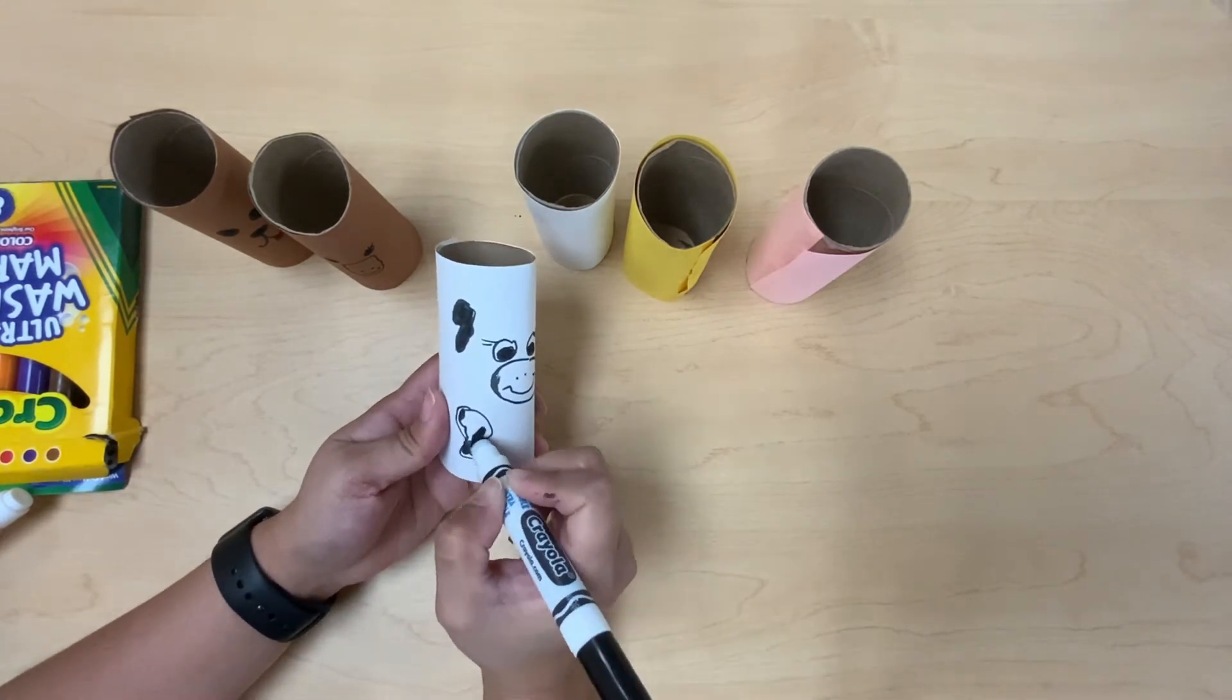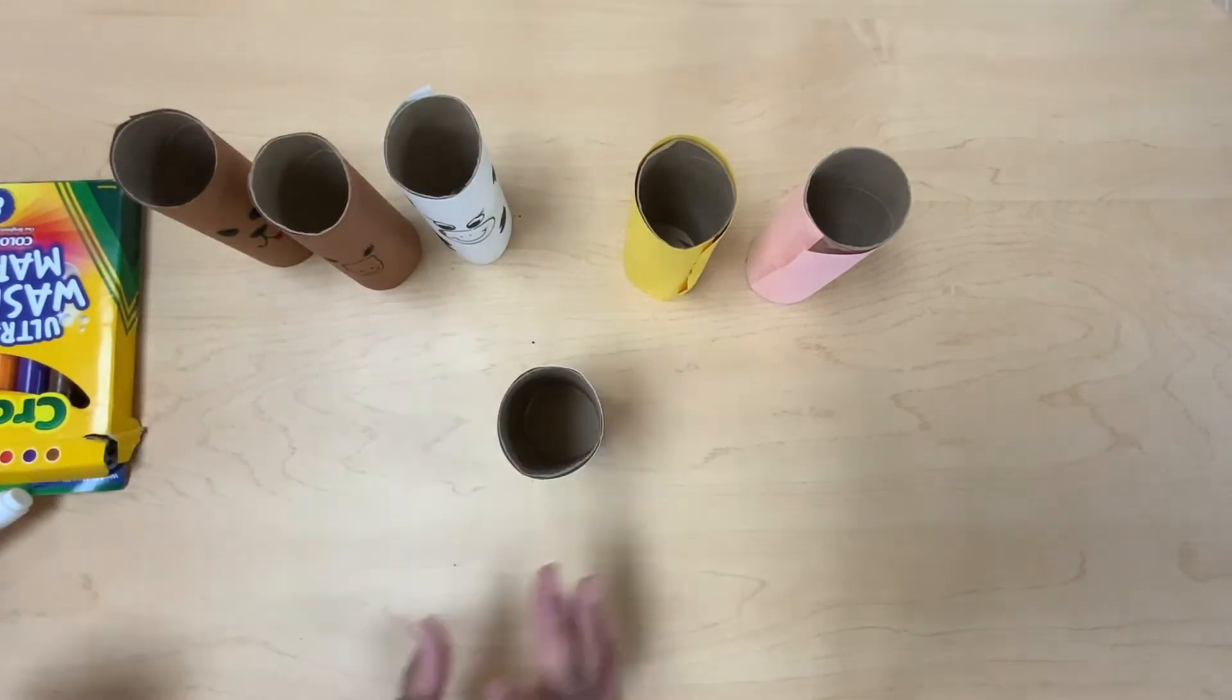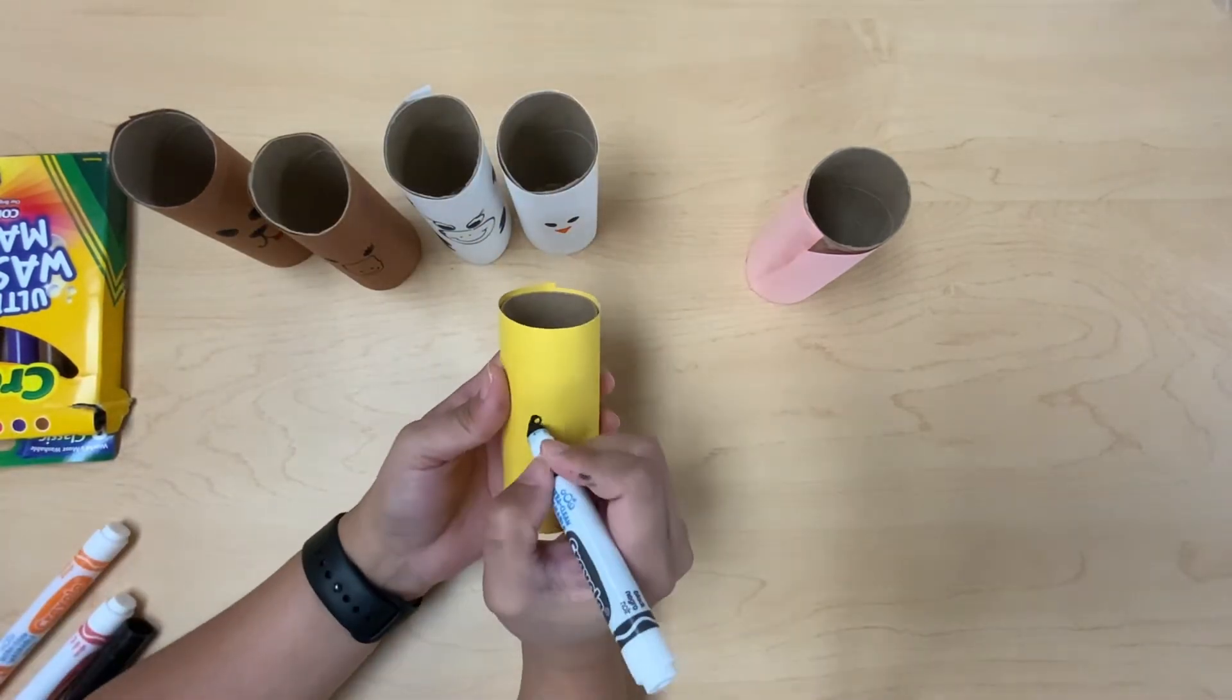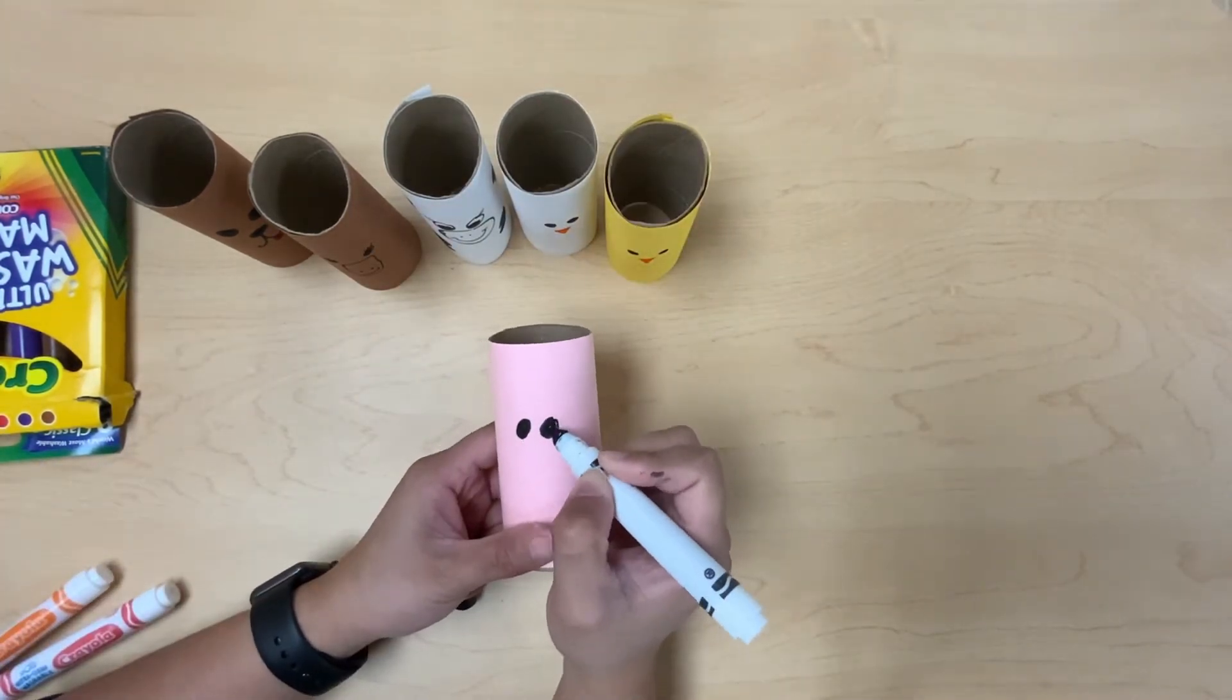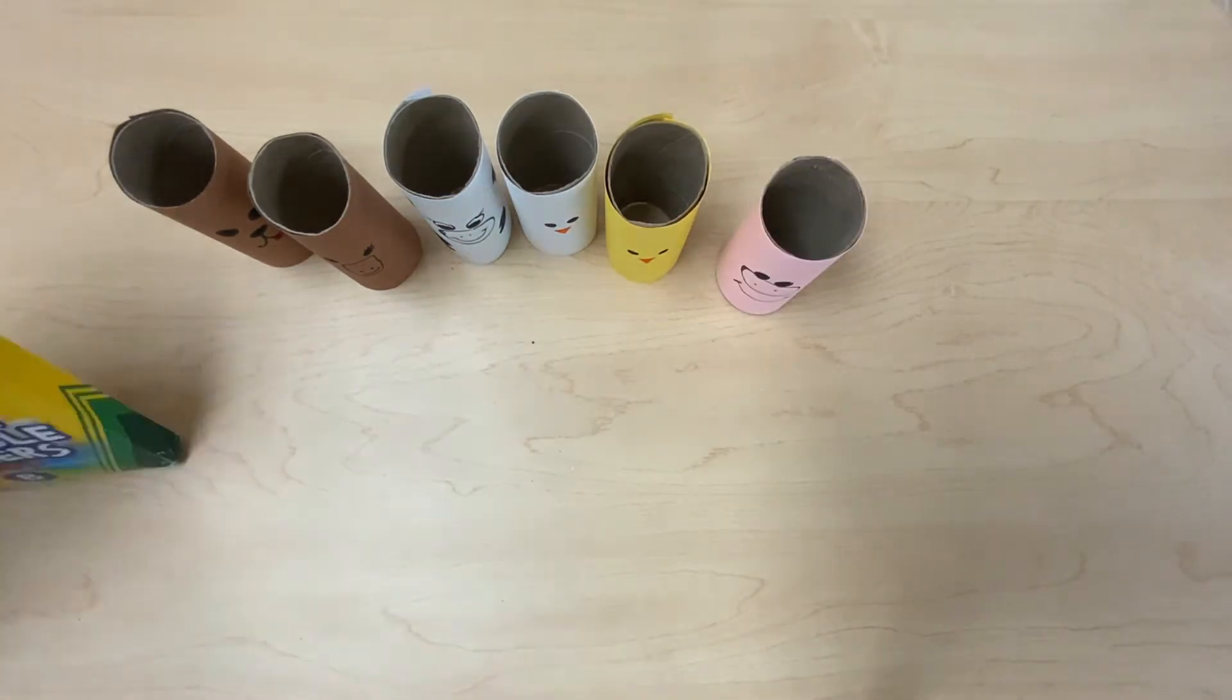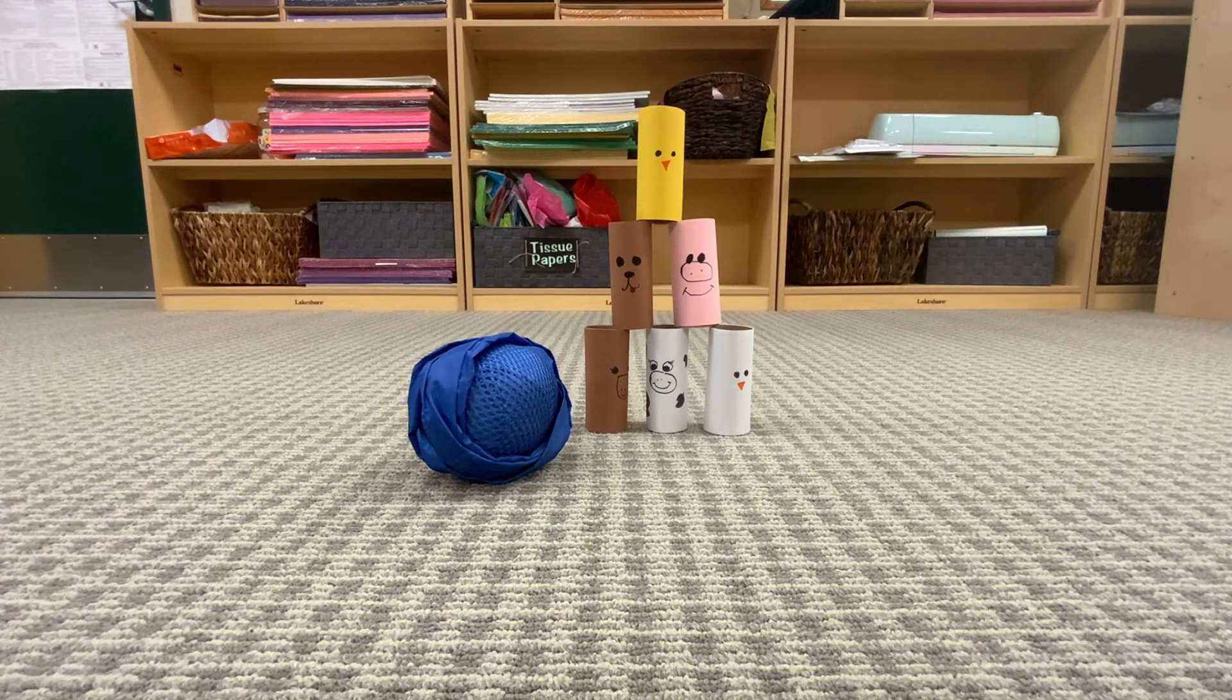And this one is a duck. What do you think the yellow one is? The yellow one is a chick. And what about the pink one? What do you think it is? The pink one is a pig.